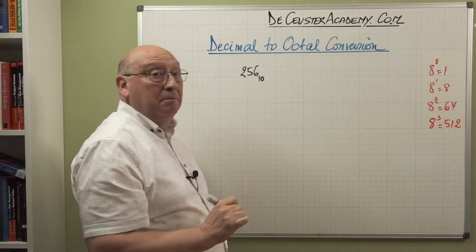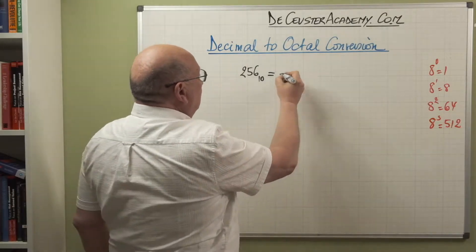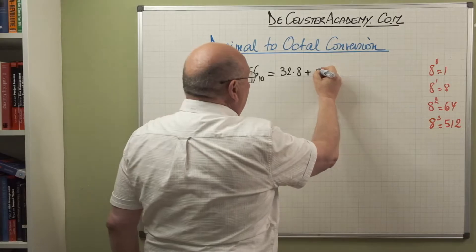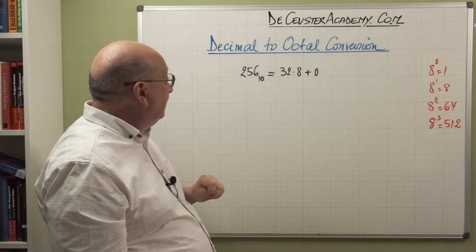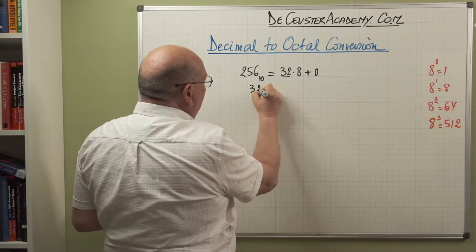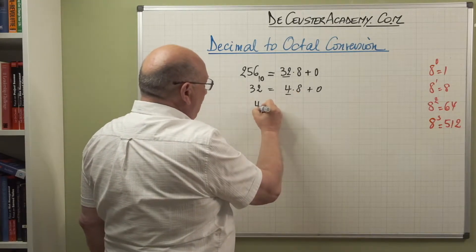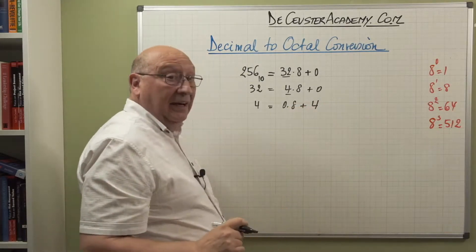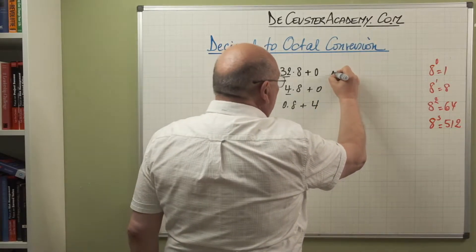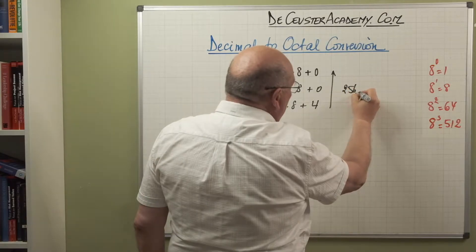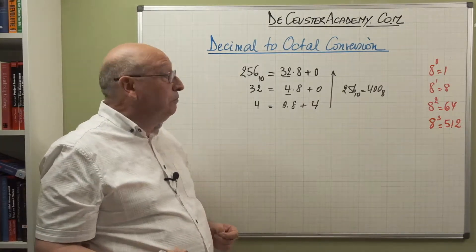We can write 256 as 32 times 8 plus 0, so basically 32 times 8 is exactly 256. The next step: we take the 32 and this is 4 times 8 plus 0. Then 4 is 0 times 8 plus 4. We read from bottom to top — highest to lowest — and we say that 256 base 10 is equal to 400 base 8.